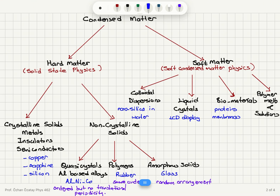Looking at condensed matter systems, we classify them according to the rigidity of the bonds. Hard materials and soft materials are subjects of different types of physics: solid-state physics studies hard materials, and soft condensed matter physics studies soft materials.